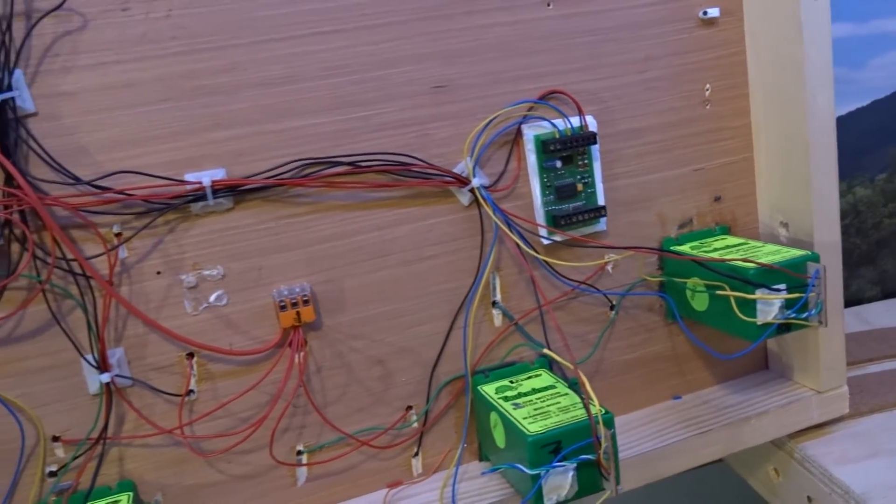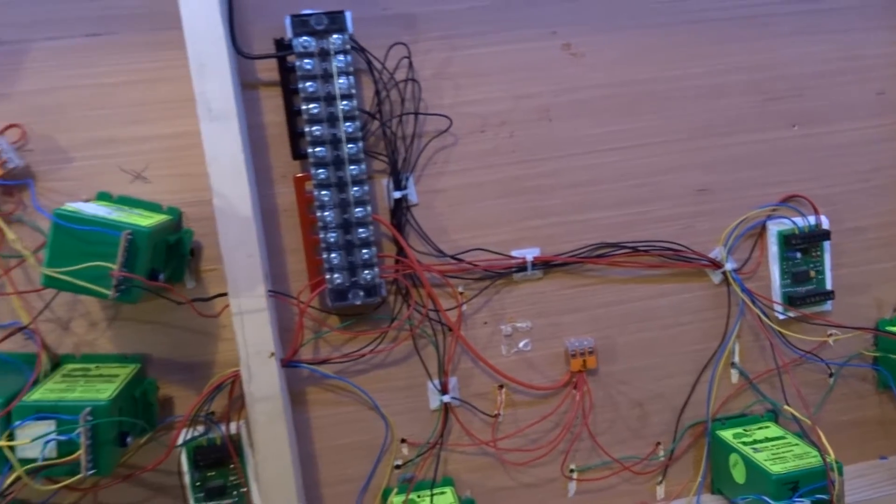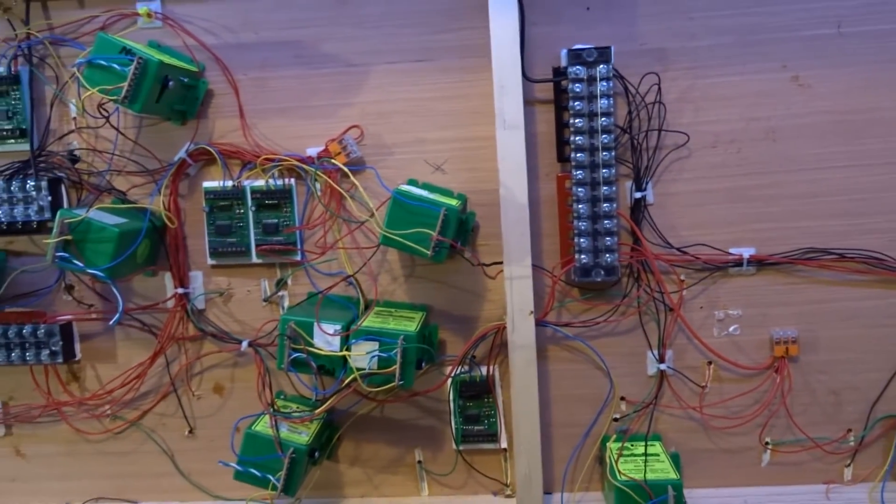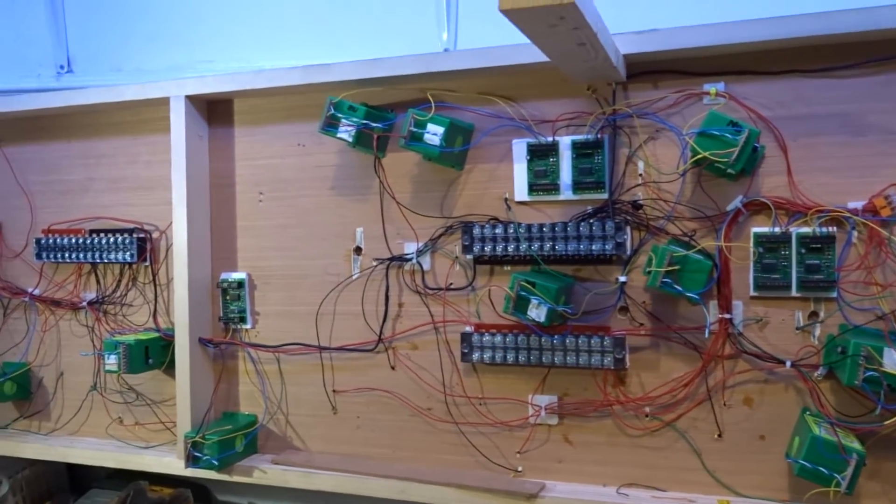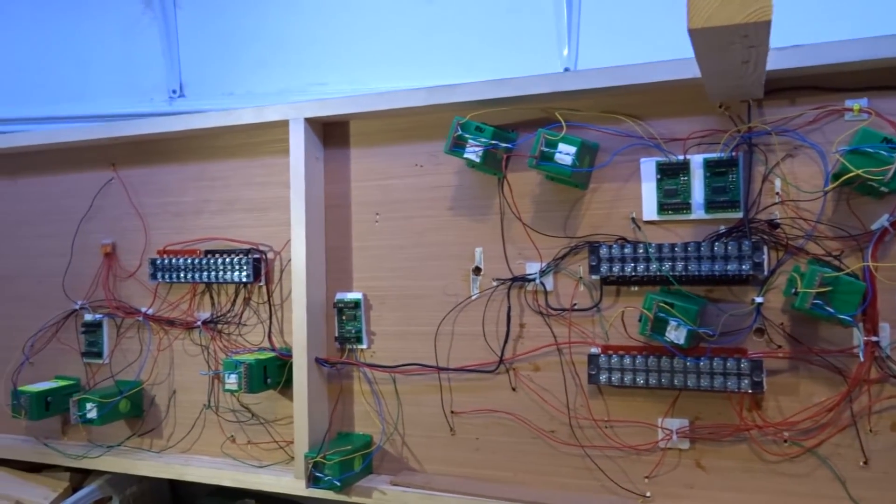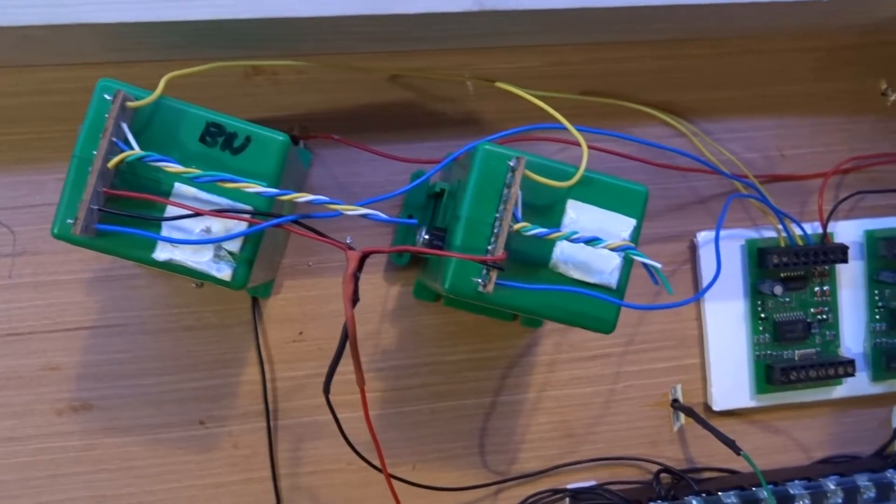These WAGO connectors are in all the positions that I will be putting my block detection modules in. As I said before those WAGO connectors they just came from the previous layout. They are good for holding wires together just before you want to put them anywhere.